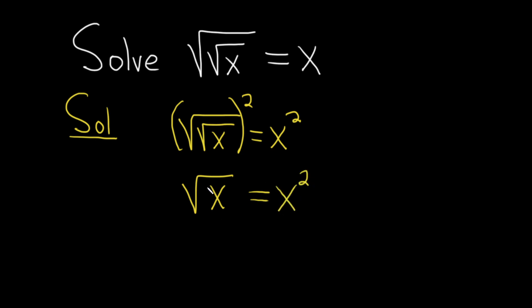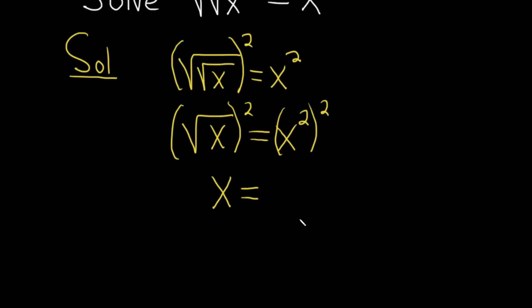Now we still have a square root here so we have to do it again. So again squaring both sides we end up getting rid of the square root over here on the left. So we just get x equals, and then here when you square these the property of exponents says that you multiply. So 2 times 2 is equal to 4. So we get x to the 4th. So we have x equal to x to the 4th.